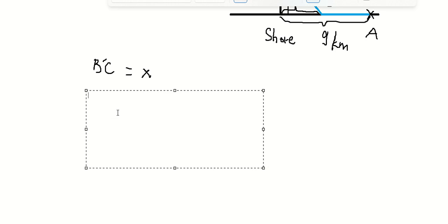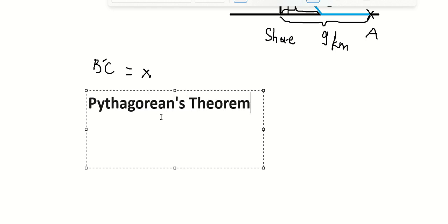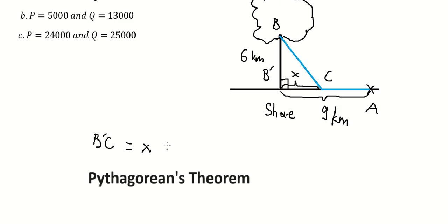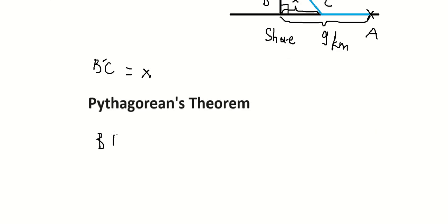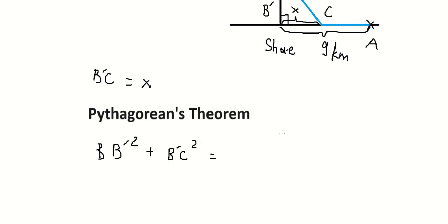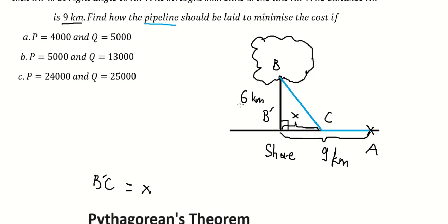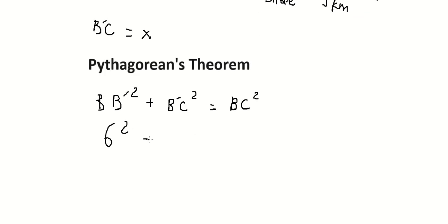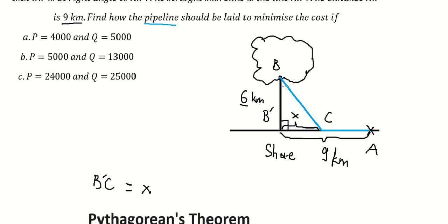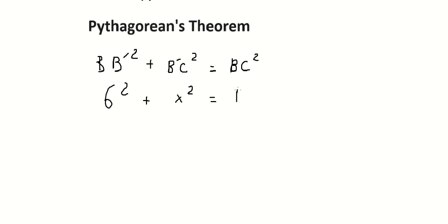We can use the Pythagorean theorem. So BB-star squared plus B-star C squared equals BC squared. We have 6 squared plus x squared equals BC squared. We put the square root on both sides and we get BC equals the square root of 36 plus x squared.